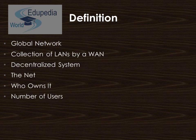The internet is decentralized, where each computer on the internet is independent, so the system would still operate even if parts of it were destroyed. The internet, sometimes simply called the net, is a worldwide system of computer networks — a network of networks — in which users at any one computer can get shared information from any other computer and sometimes talk directly to users at other computers.